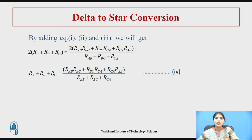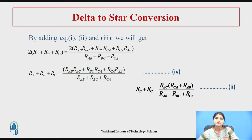Now, adding Equations 1, 2, and 3, we get Equation 4. After simplification: R_A + R_B + R_C = (R_AB·R_BC + R_BC·R_CA + R_CA·R_AB) / (R_AB + R_BC + R_CA), which represents the total resistance. Then by subtracting Equation 2 from Equation 4, we obtain the final value of R_A: R_A = R_CA · R_AB / (R_AB + R_BC + R_CA).